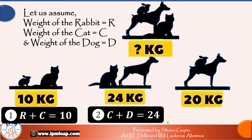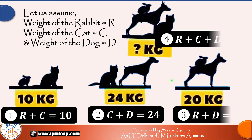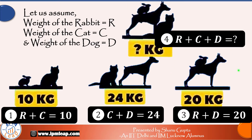And the final picture, picture number three, shows a rabbit and a dog and their combined weight is given to be 20 kgs. So our third and final equation is R plus D is equal to 20.